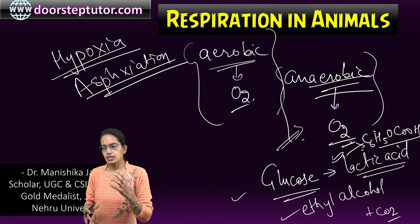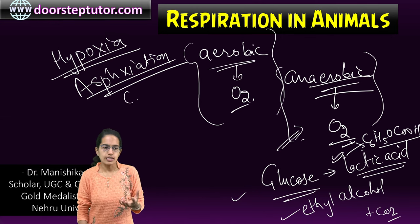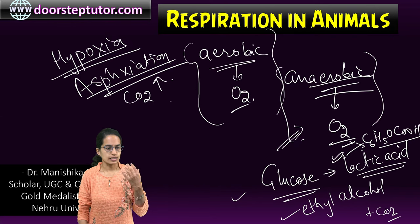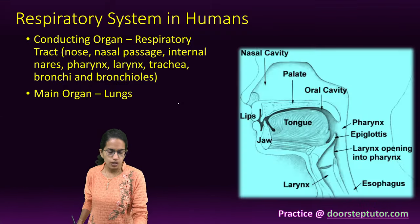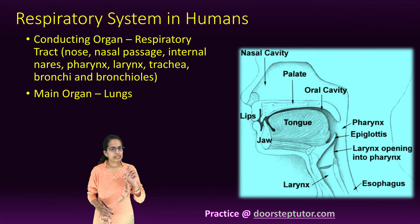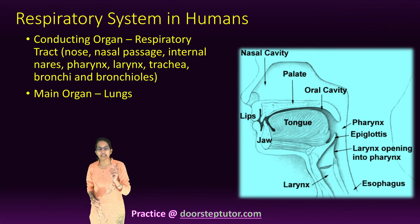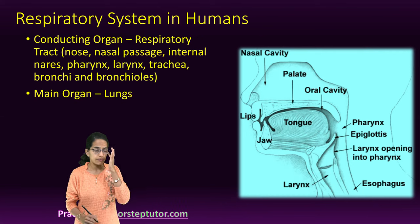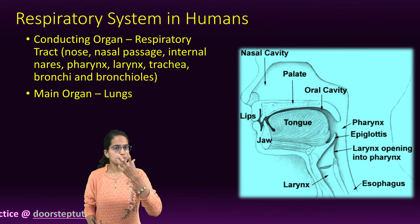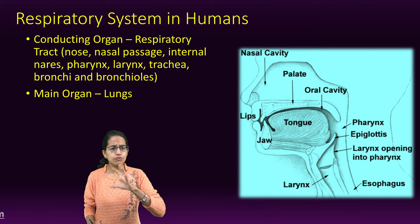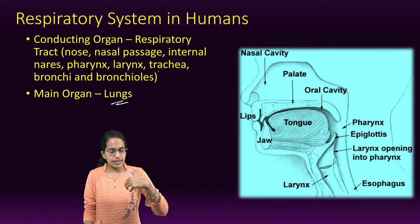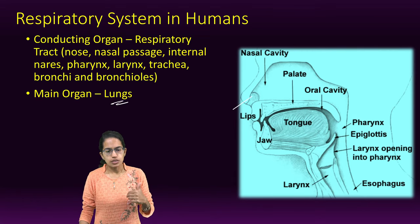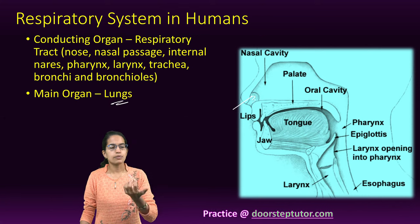Coming on to the respiratory system in human beings, it can be divided into two parts: the respiratory tract and the lungs. We will first understand the respiratory tract and then the main organ, the lung. The respiratory tract begins with the nose, where there is a nasal cavity, external layers, and small hairs which prevent dust particles from entering.